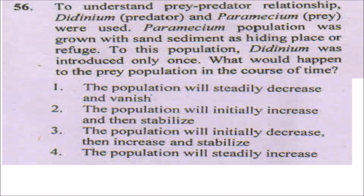The next question: in a prey-predator study, Didinium (predator) and Paramecium (prey) were used. Paramecium was grown with sand sediment as hiding places, and then Didinium was introduced only once. What would happen to the prey population over time? When Didinium is introduced, it will feed on as much prey as possible, so the prey population will first decrease to a very low amount. Once Didinium stabilizes and since it was introduced only once (no further increase in Didinium), after a certain time the Paramecium population will start increasing and then stabilize with respect to the Didinium population. The answer will be number three.